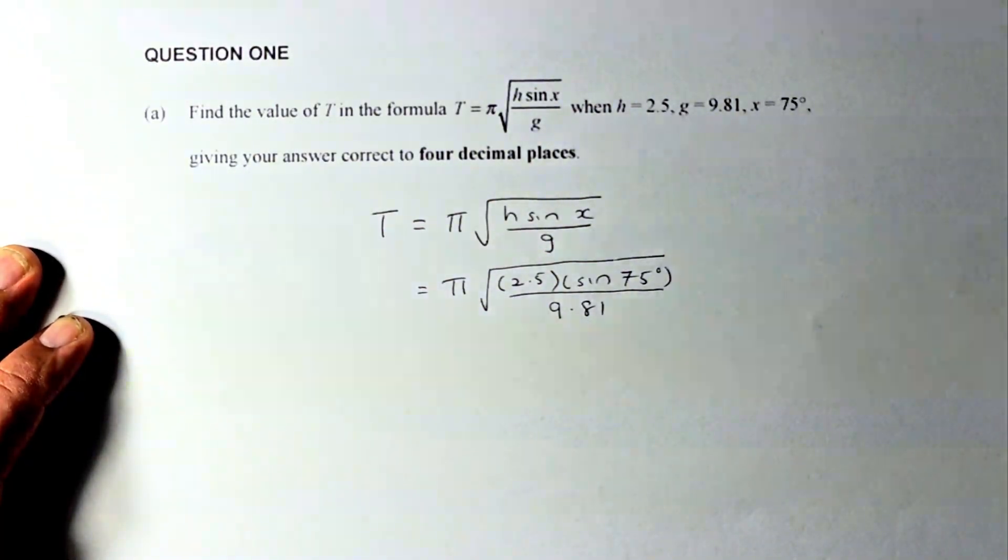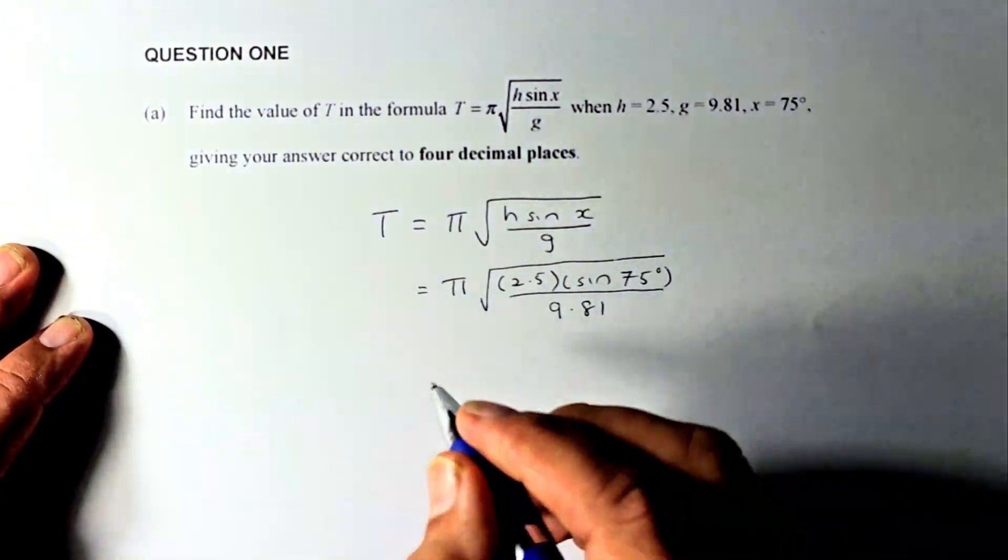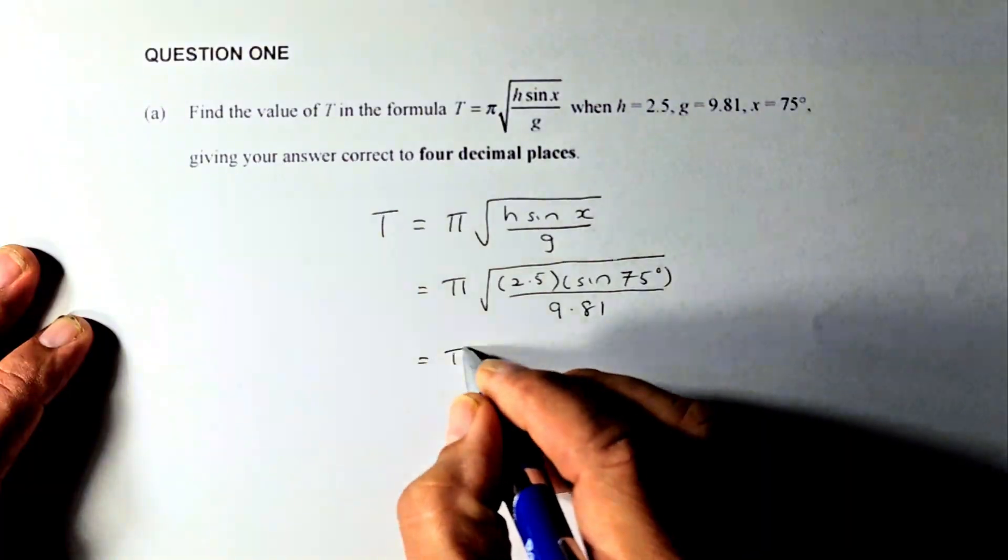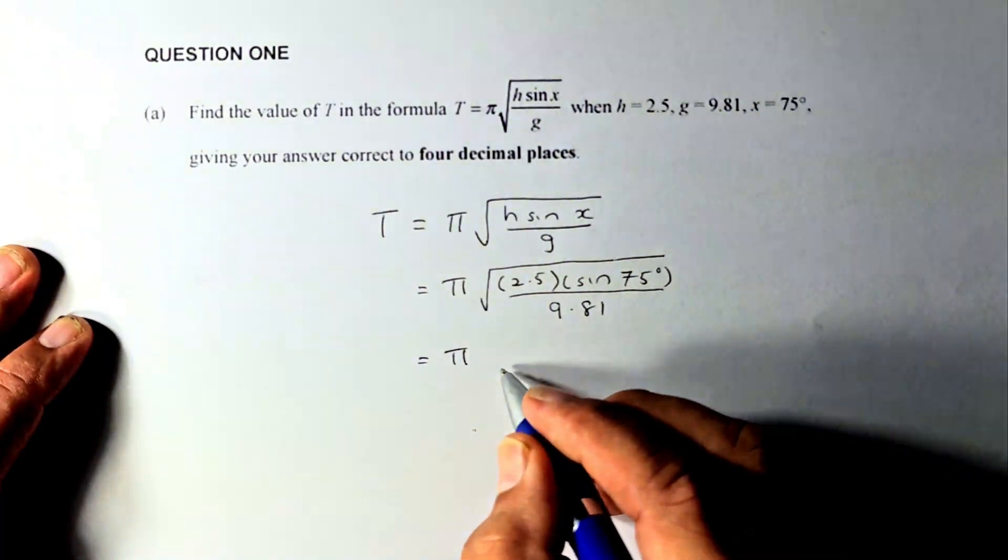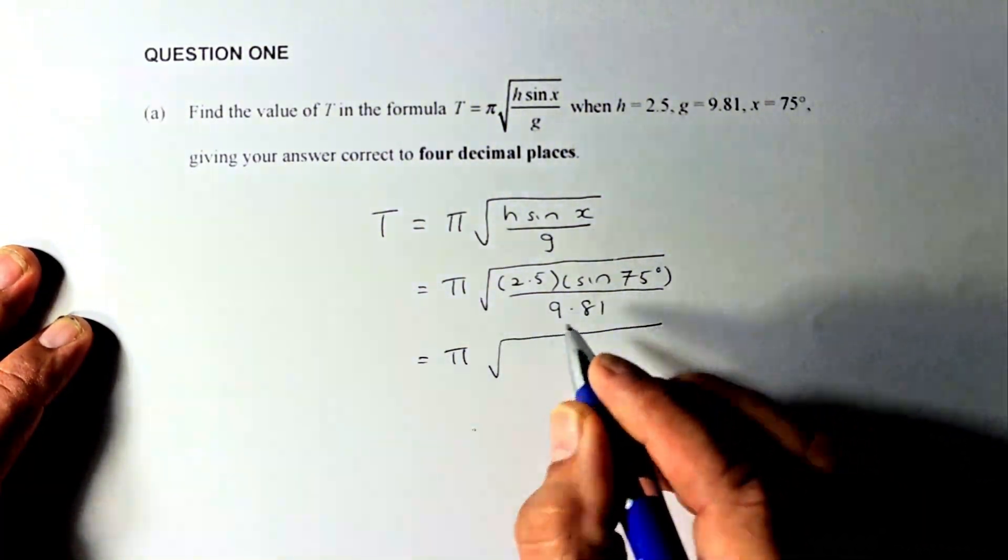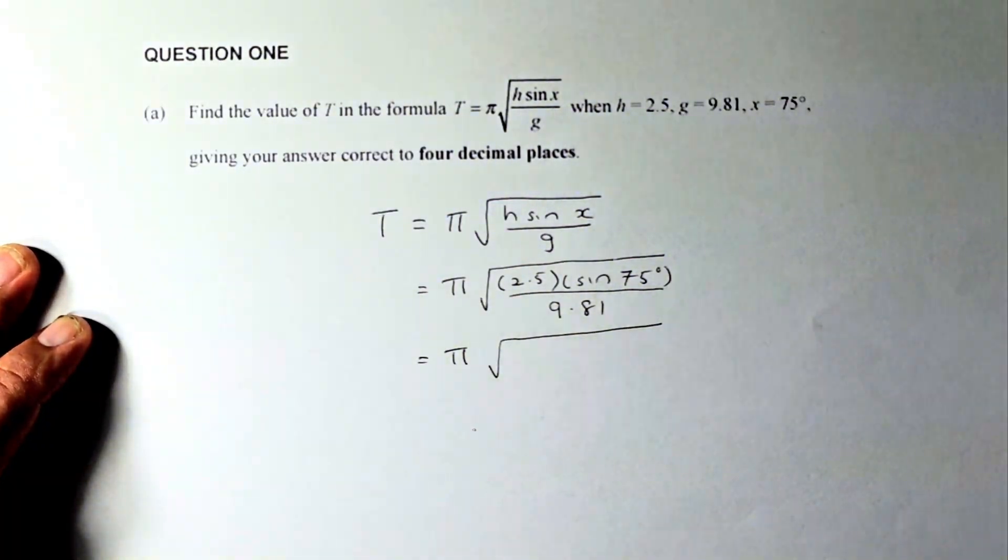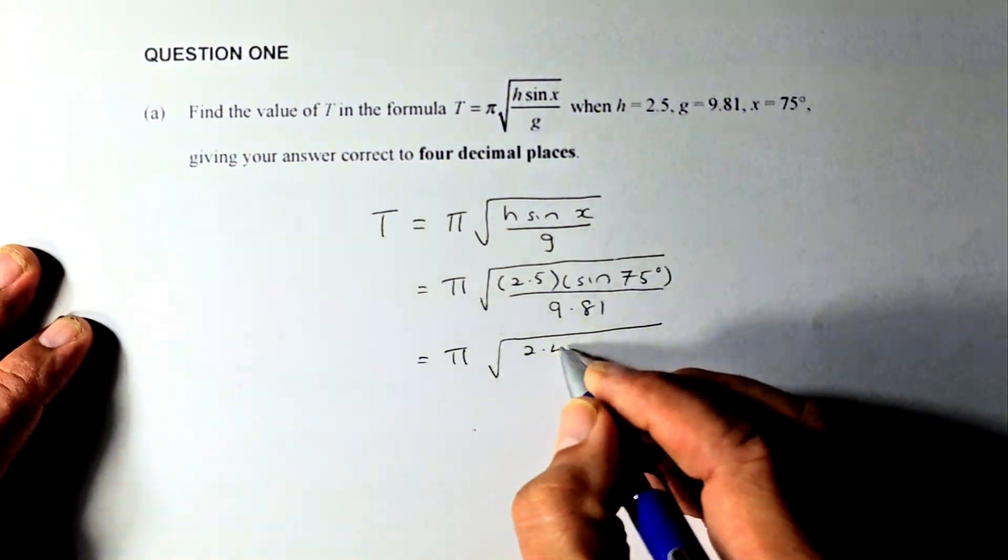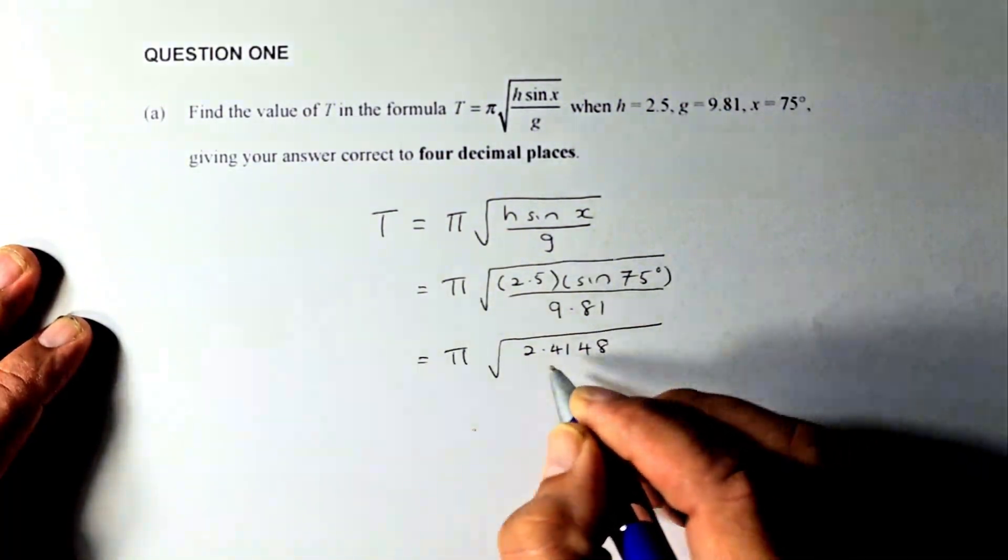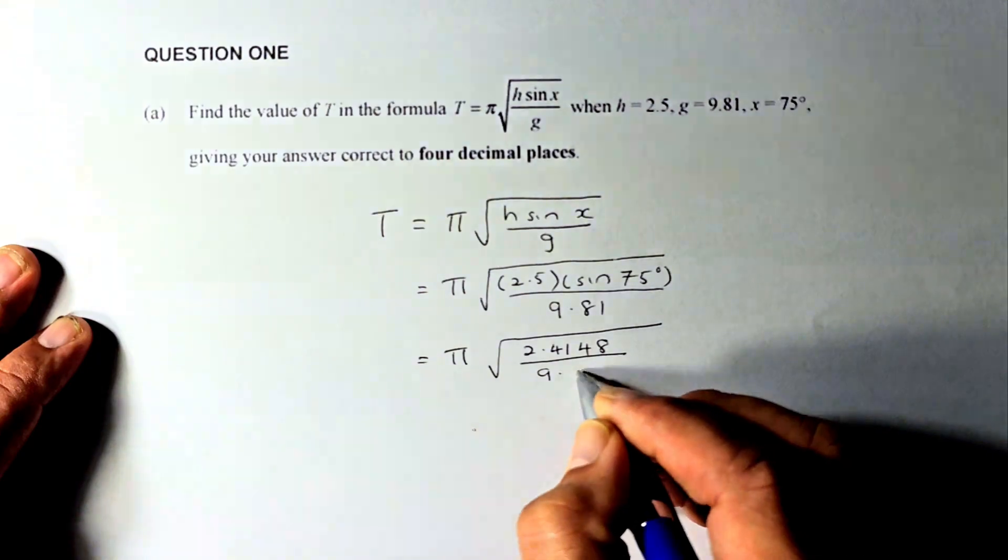Now we're going to do step by step. Make sure you have your calculator ready. So pi will remain as pi, and then what we're going to do, we are going to take 2.5 multiplied by sin 75. Put in your calculator. I've done it before. It's going to be 2.4148 and then you're going to divide by 9.81.